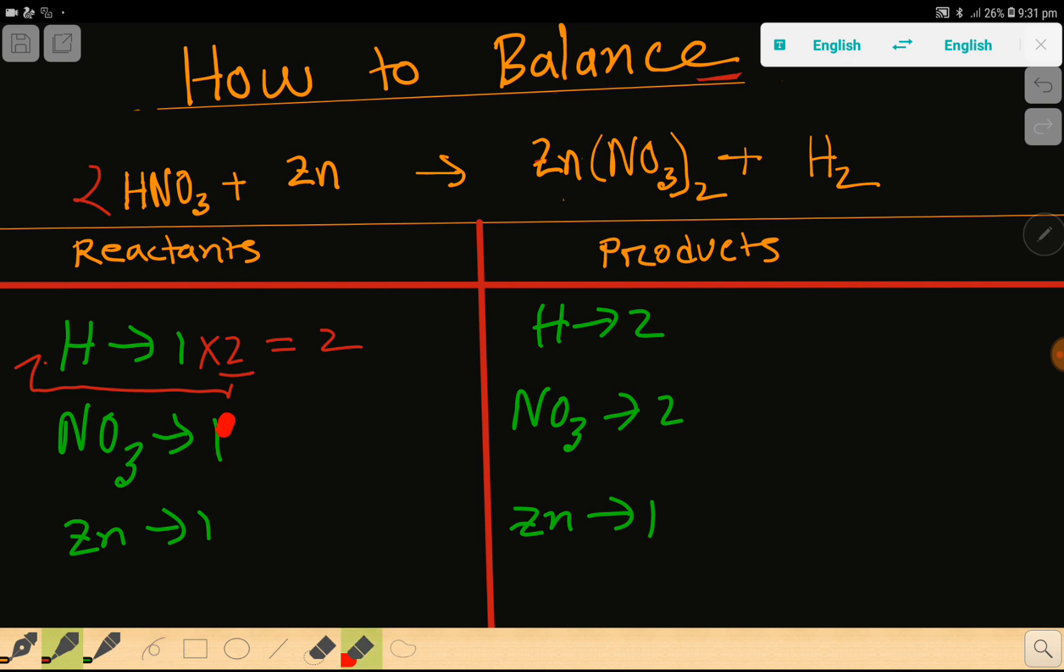So let me change this number to two. Now look, in the left-hand side we have two hydrogen, in the right-hand side we also have two hydrogen, so hydrogen is balanced. Then zinc, here we have zinc one and here we have zinc one, so everything is balanced.